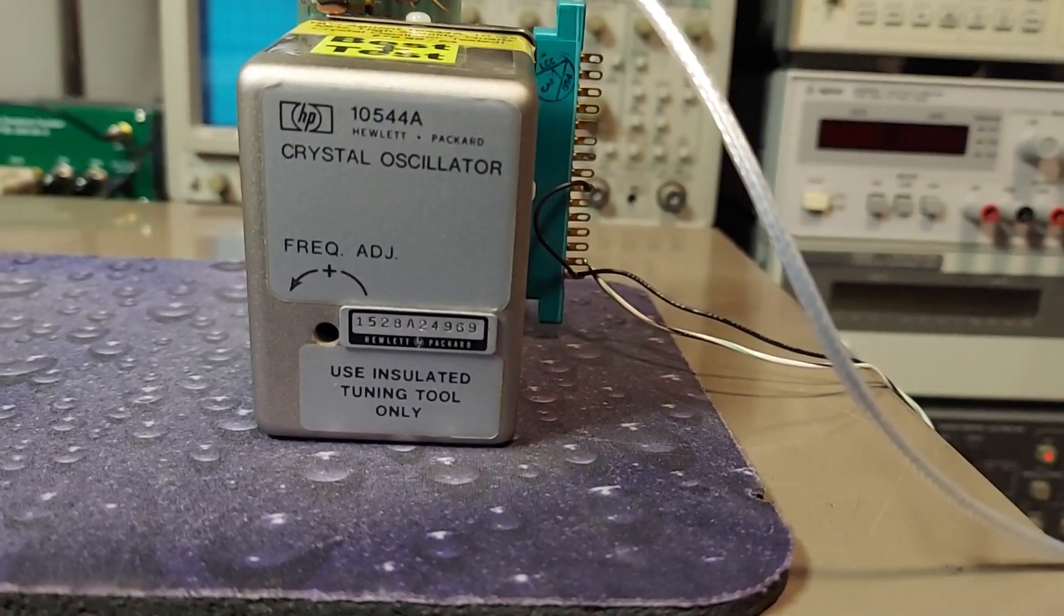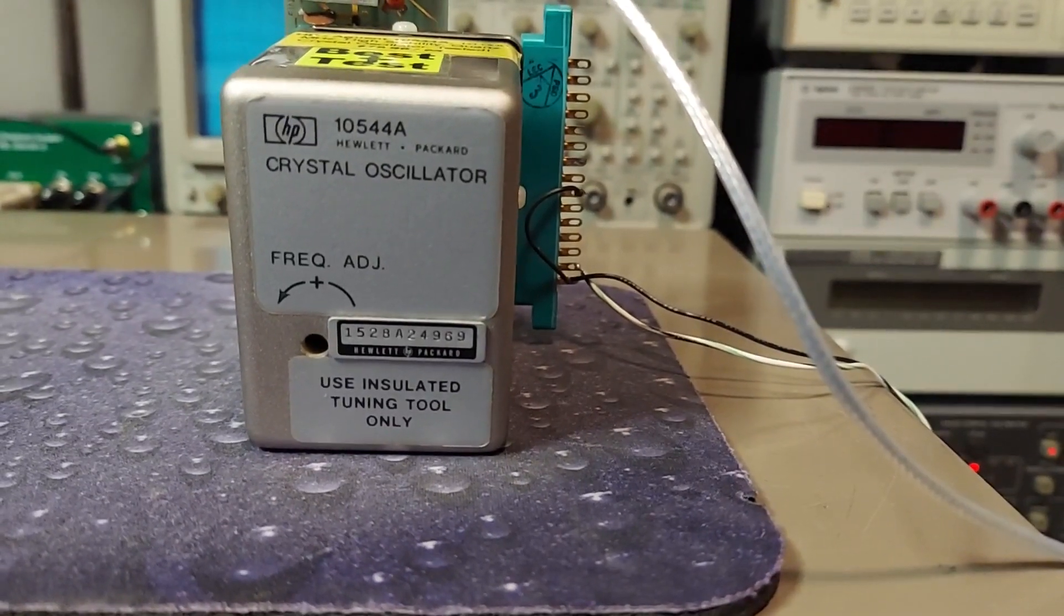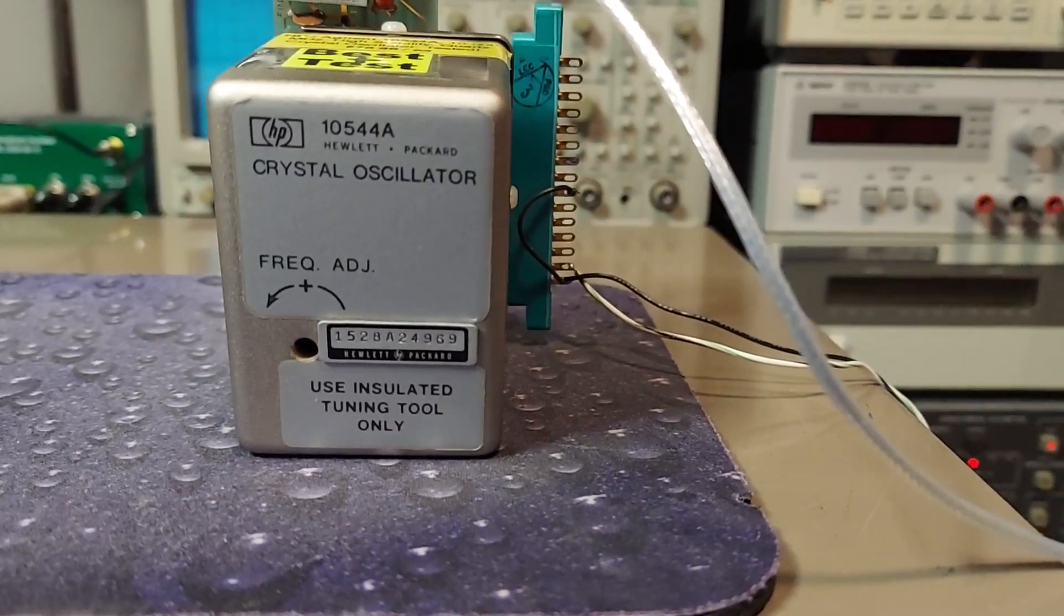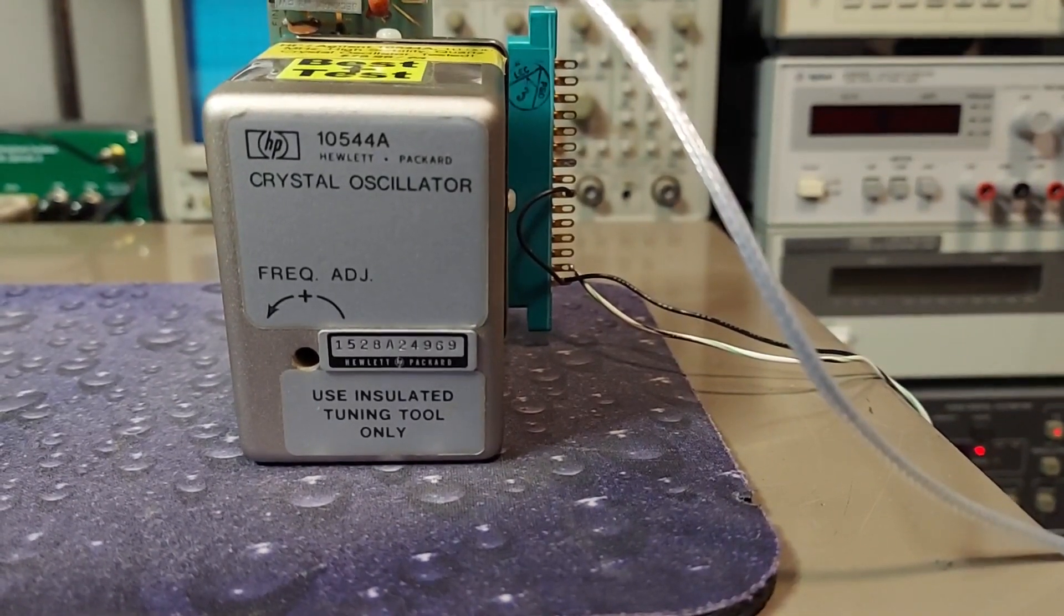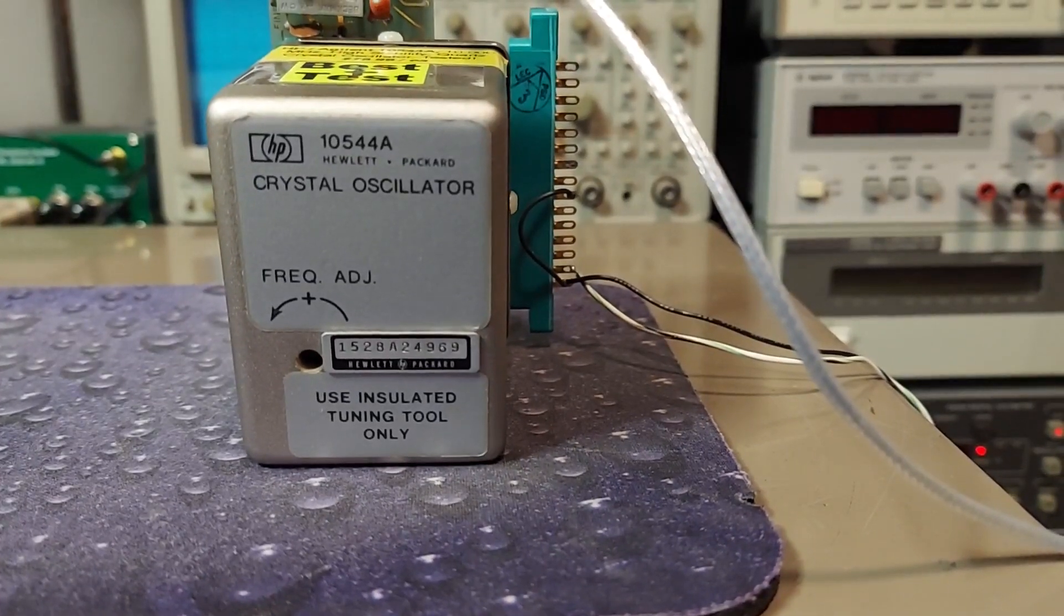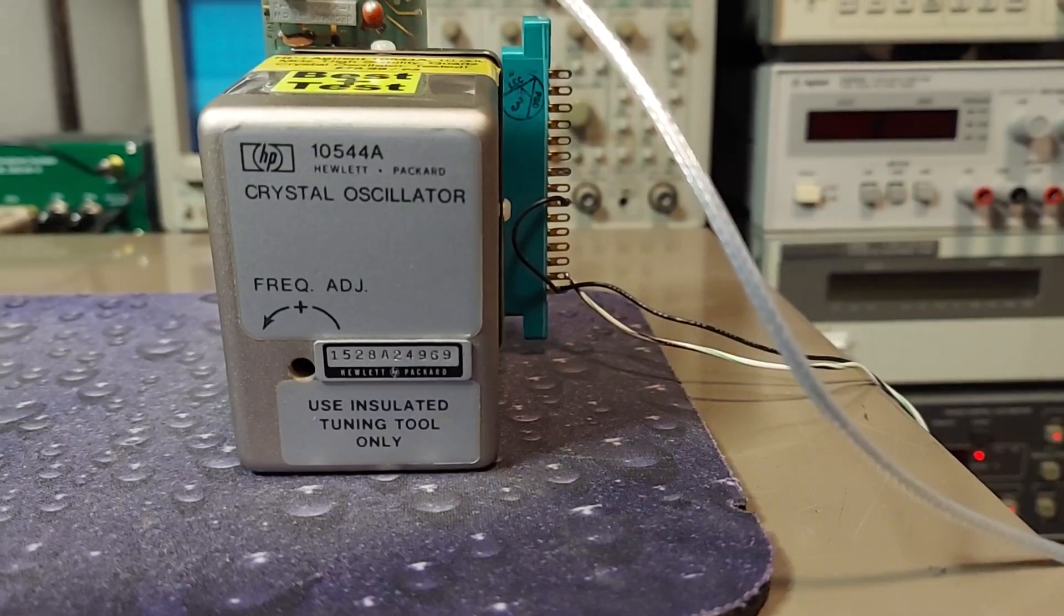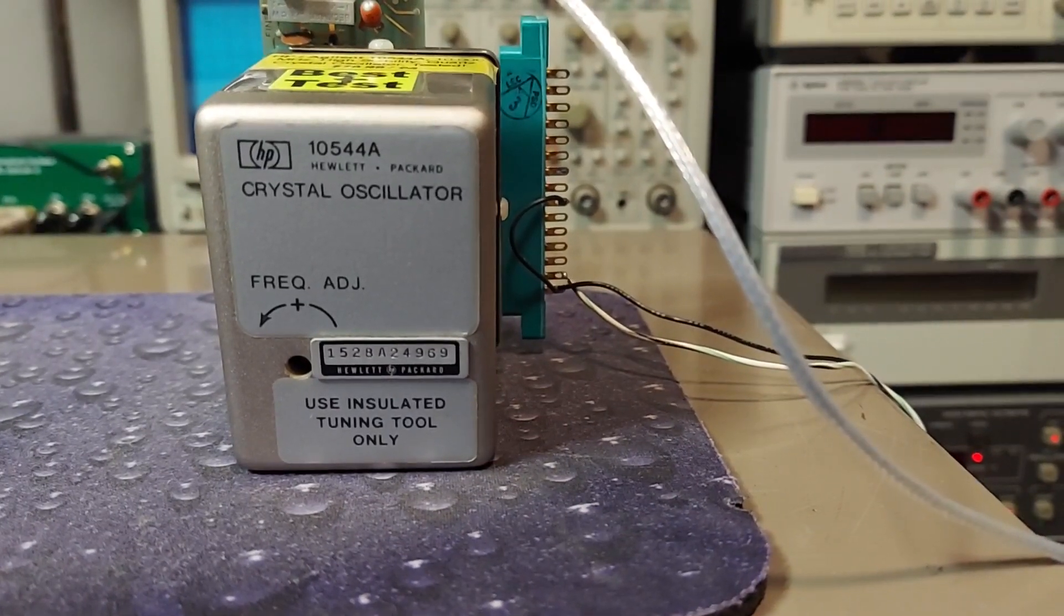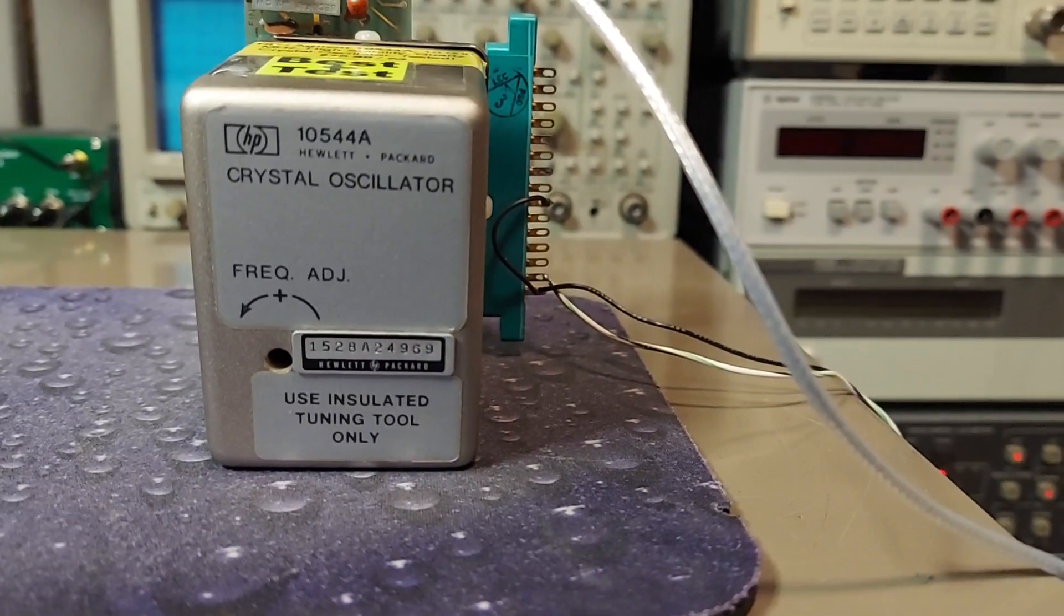Well, today just to kill some time in the lab/shack, I've been bench testing this crystal oscillator. This is an HP 10544A, an ovenized oscillator used in a lot of the earlier HP test and measurement gear like frequency counters. There is a newer version of this, the 10811A.